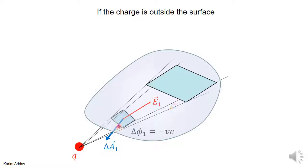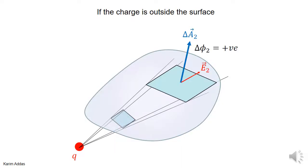But if the charge is outside, then when the electric field line goes into the surface, the element of area points from inside to outside, so the angle is bigger than 90 degrees. So the cosine is negative, so the flux is negative. When the electric field line goes into a closed surface, the contribution to the flux is negative. When the electric field line goes out of the surface, the angle between electric field and area is less than 90 degrees, and you get a positive contribution.